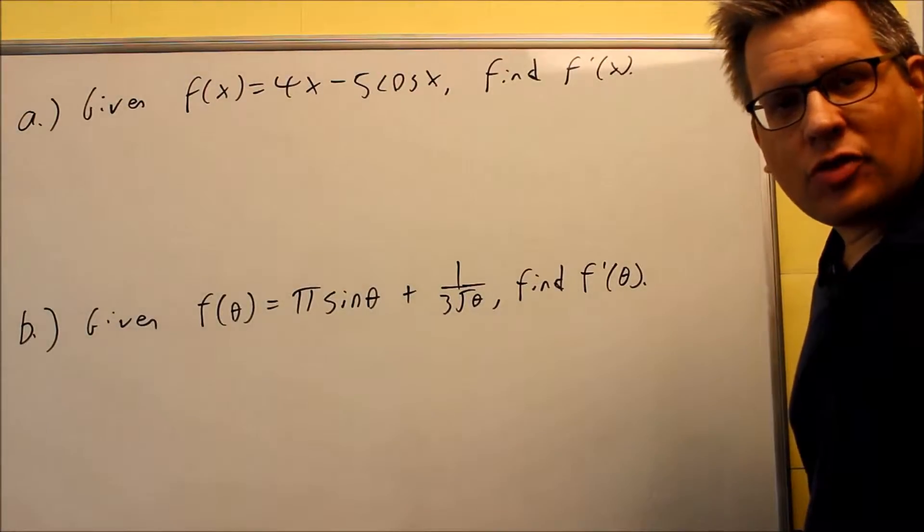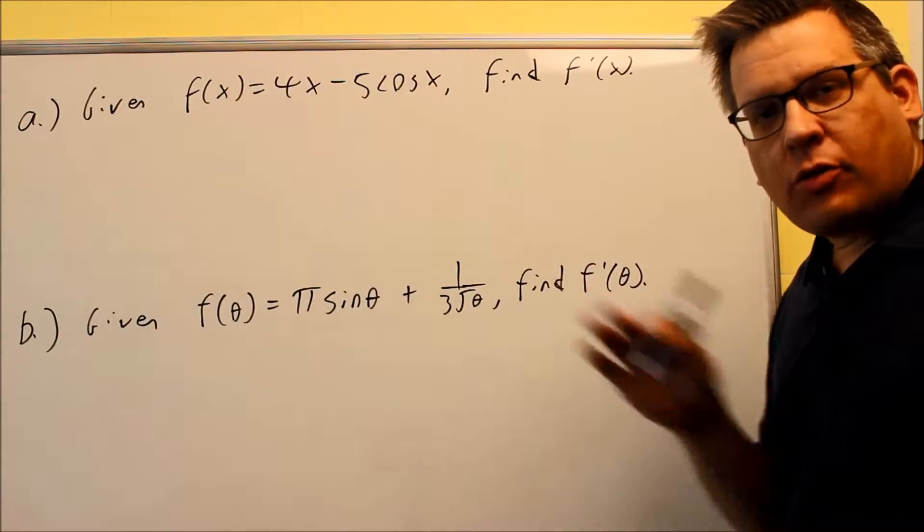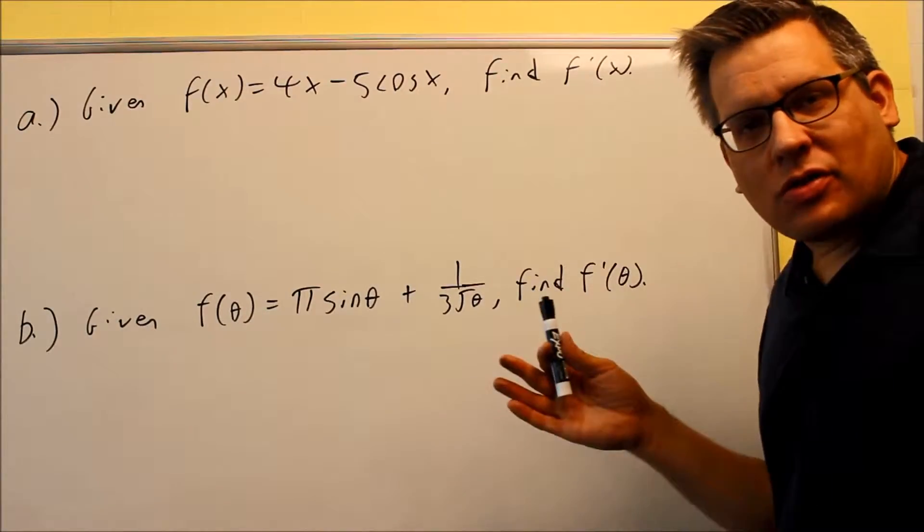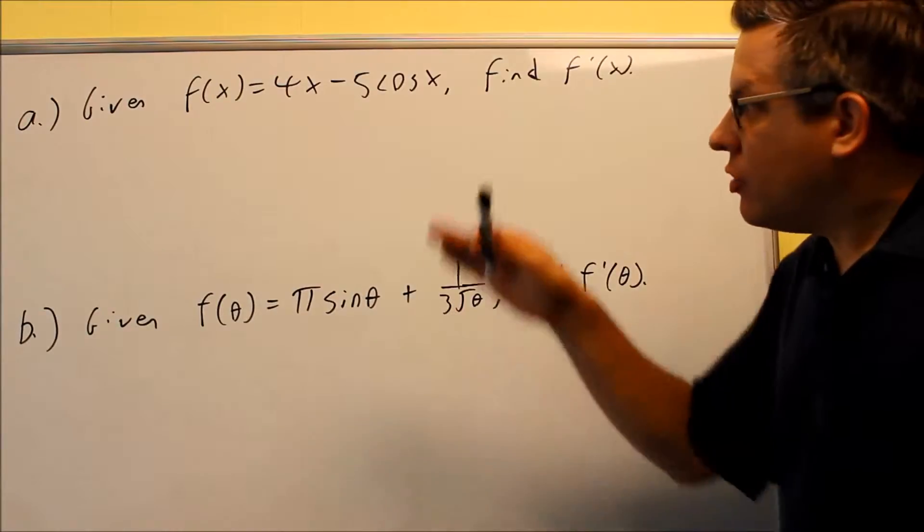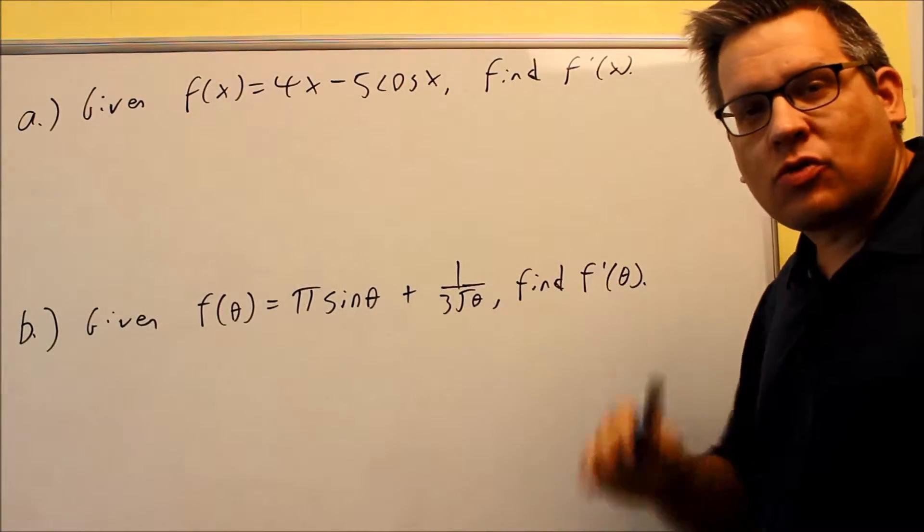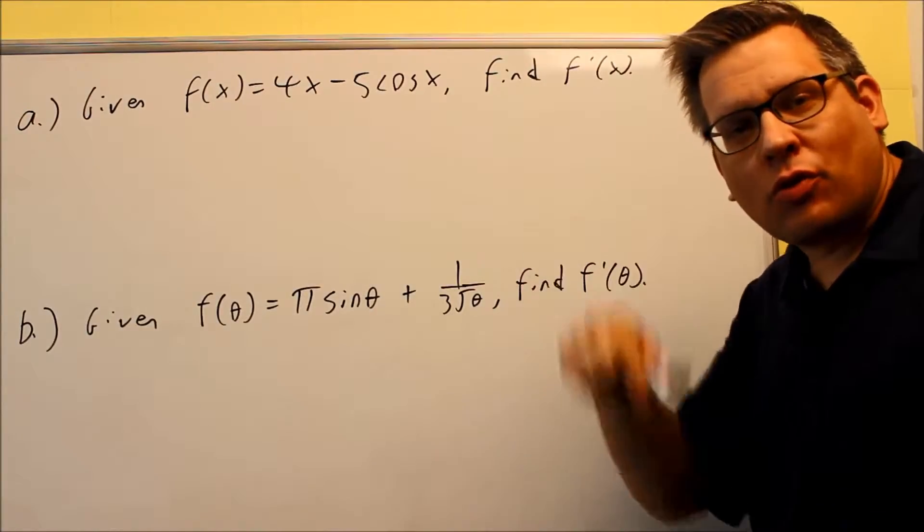Now that we've derived the derivatives for sine and cosine, we can use them directly here. You're not required to use the limit process to do that. Since we did all that and proved it, that means automatically whenever you do a derivative of cosine, for instance, we should automatically know what that derivative is and we can just write that in there instead of going through the whole limit process.